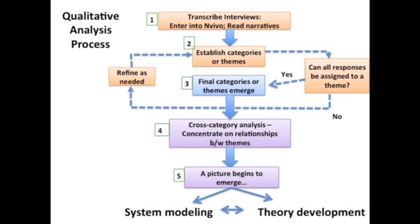There is a process associated with how you analyze qualitative data. The data is very cumbersome, but there are succinct and distinct ways we deal with it. We digitally record the conversations, transcribe them, and enter them into a program like NVivo. Then we read the narratives and start looking for categories or themes in what farmers are saying with regard to individual topics. Can all responses be assigned to a theme? If yes, it goes into a category. If not, there's further data refining. Once themes emerge, you do cross-category analysis, examine patterns between themes, and look at patterns between farmers in different states and types of farms. A picture of what we're trying to understand starts to emerge, which applies to systems analysis and theory development from an inductive perspective.